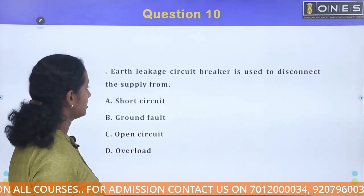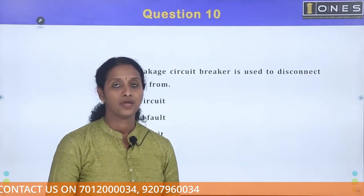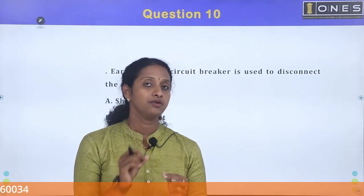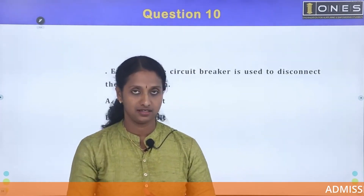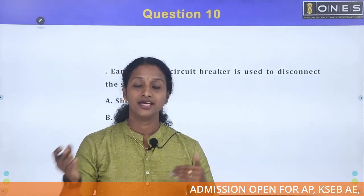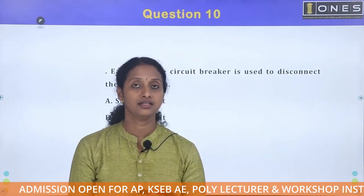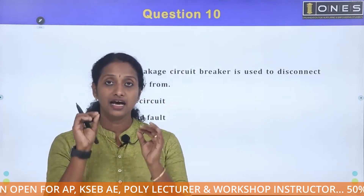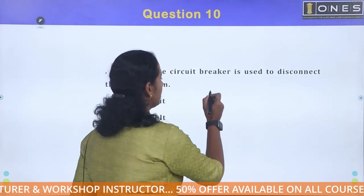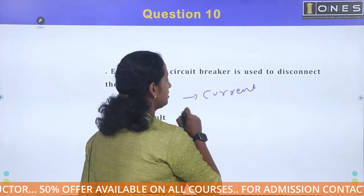Earth leakage circuit breaker is used to disconnect the supply. We call it ELCB. It is different from an energy meter or MCB. ELCB is used to detect earth leakage current.